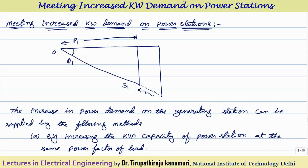To represent this easily, I am representing the initial operating point by O, A, B. Now this changes to point C. Extending from this point, I represent by D, then F and E. So now this extra capacity — this extra rating — has to be improved, and automatically some extra cost is involved. This is one procedure.